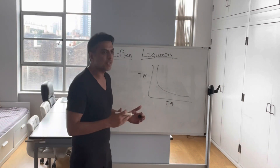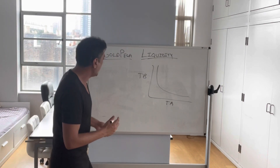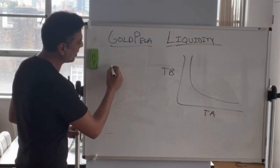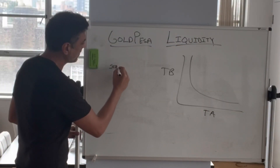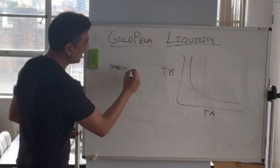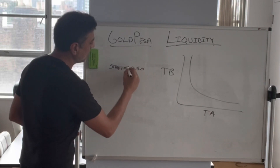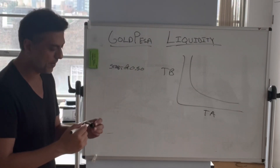What would happen in basic math is that we would — let's say our token at, say, a starting price of $0.50 — say we're launching our GPO token at $0.50.